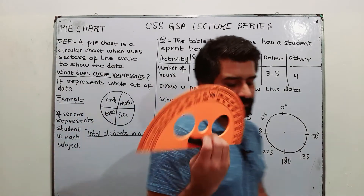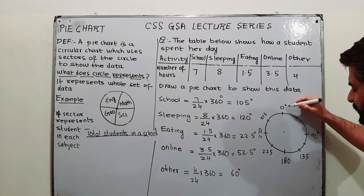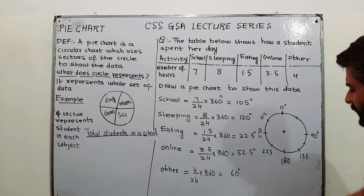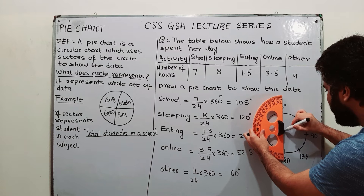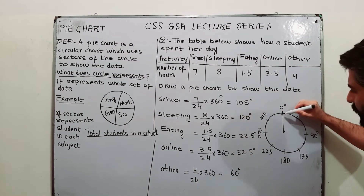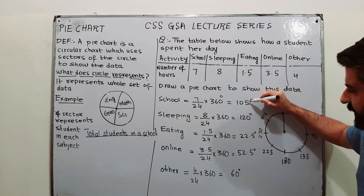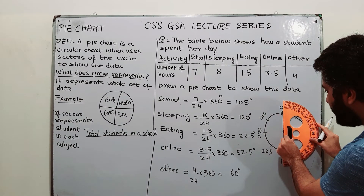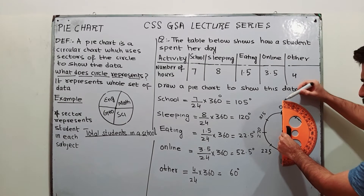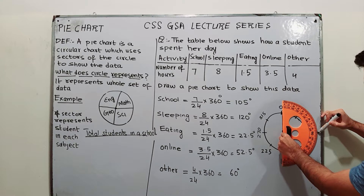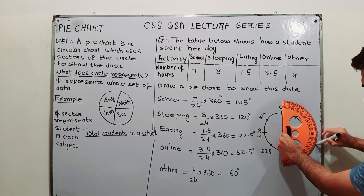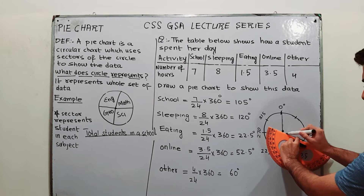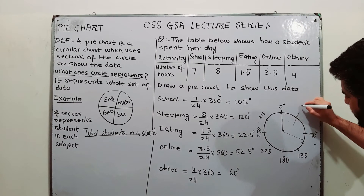To construct the pie chart, start at angle zero — this is the center of the circle. First, draw a straight line from the center. The first sector is for school, which has an angle of 105 degrees. Place your protractor on this line, with the center of the protractor at the center of the circle, and measure an angle of 105 degrees — that is right here. Join it with the center. This sector is for school.